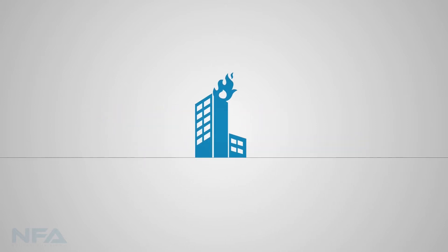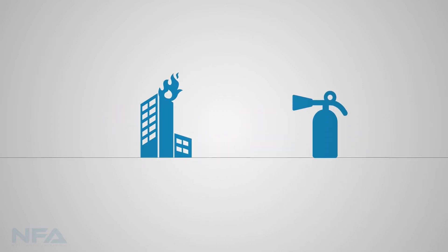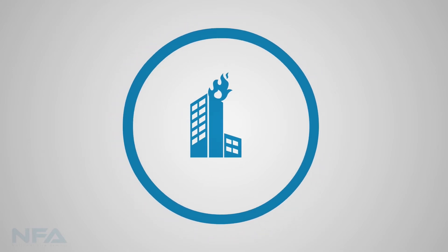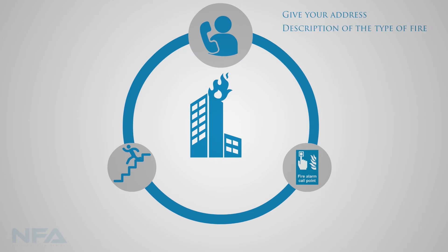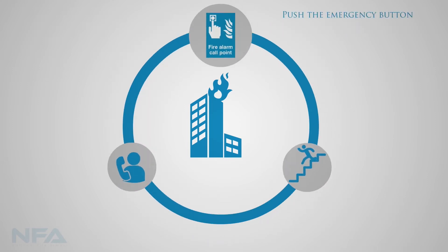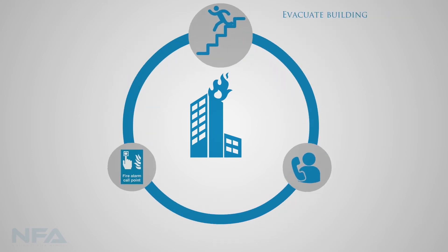In case of a fire accident, before using a fire extinguisher, ensure someone informs the fire brigade to come immediately, giving your address and a brief description of the type of fire. Push the emergency button and alert others about the fire, and evacuate people from the building to a safe assembly point.